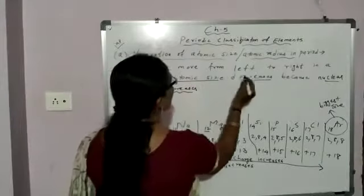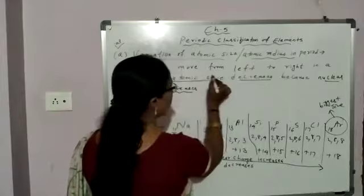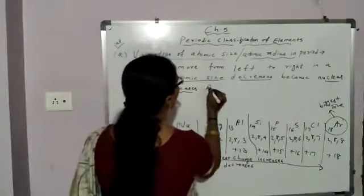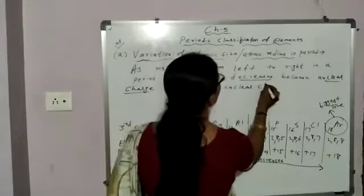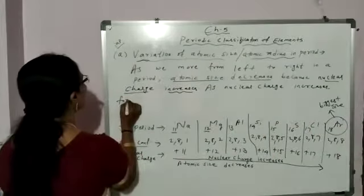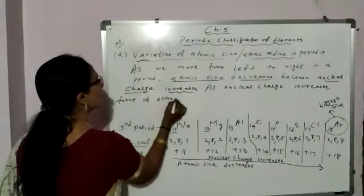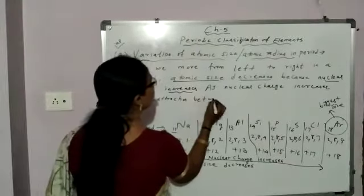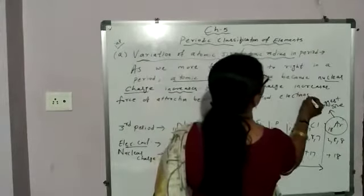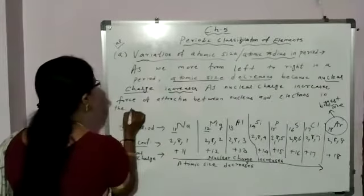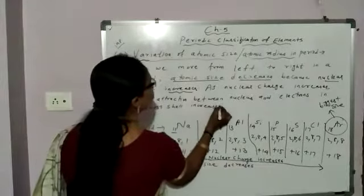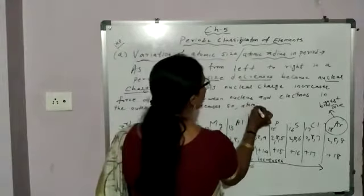So, as we move from left to right in a period, atomic size decreases. Because nuclear charge increases. And as nuclear charge increases, force of attraction between nucleus and electrons in the outer most shell increases, so atomic size decreases.